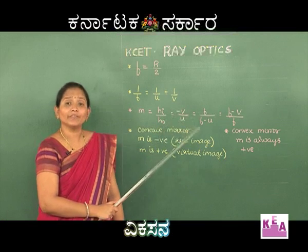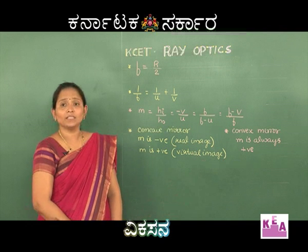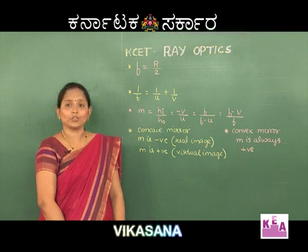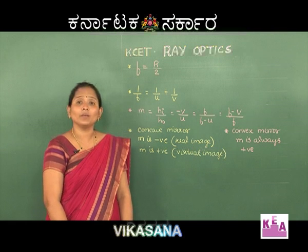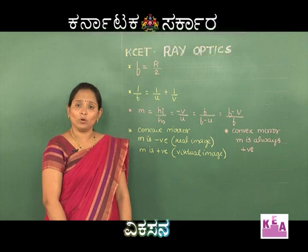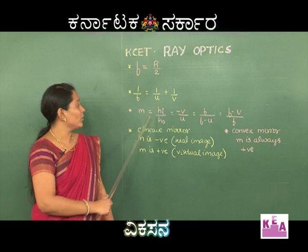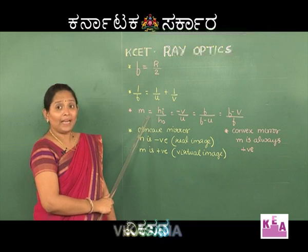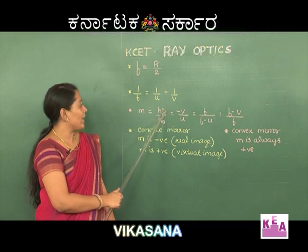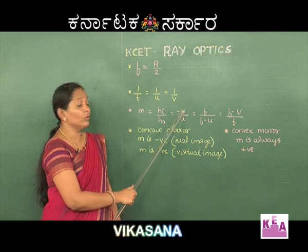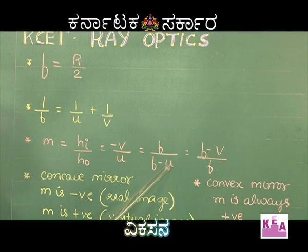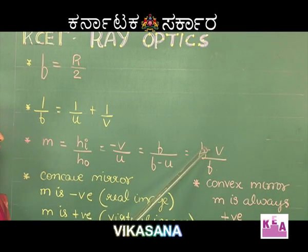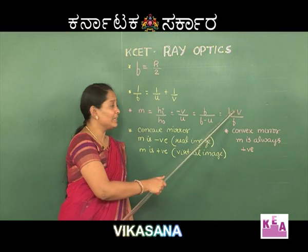Another very important definition is regarding magnification. Magnification is defined as the ratio of the size of the image to the size of the object. It can also be expressed as m = hi/ho = −v/u = f/(f − u) = (f − v)/f.